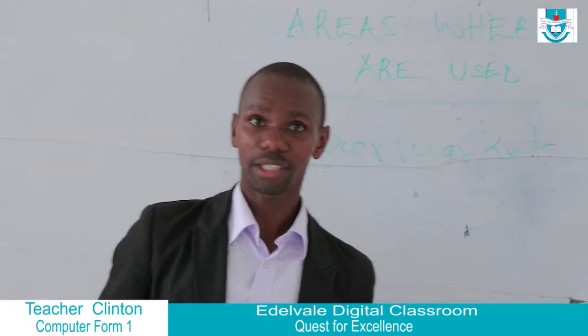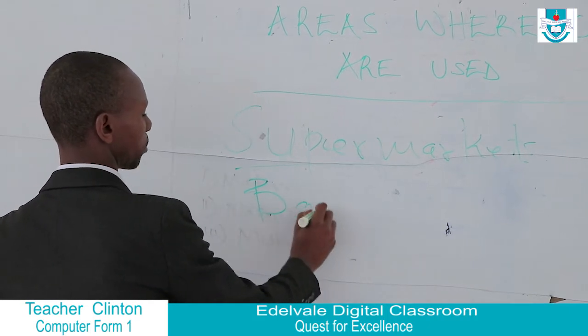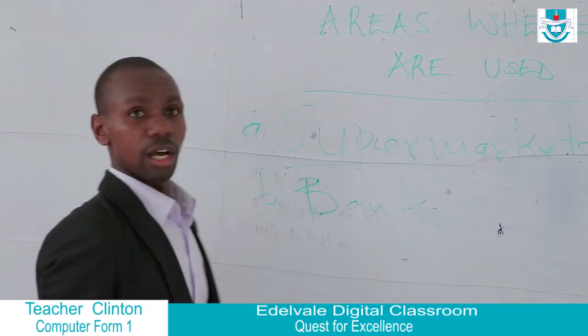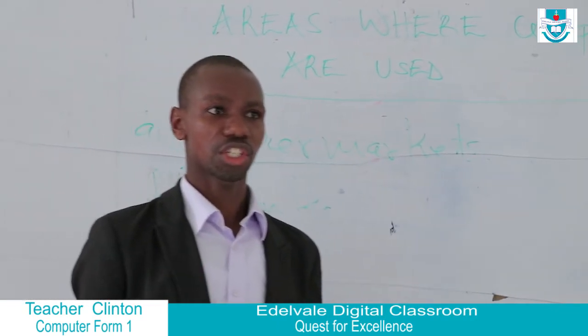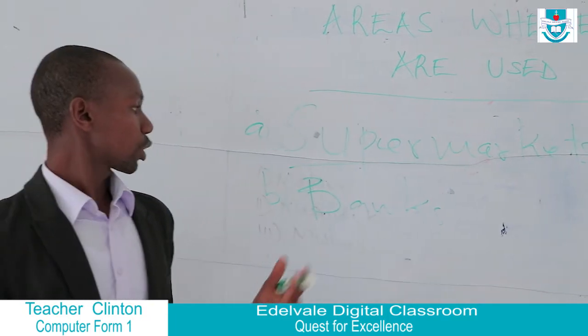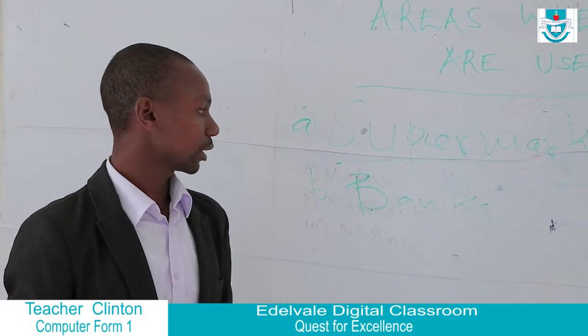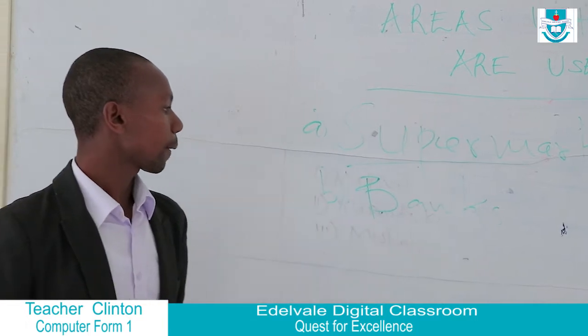Another area where we have seen computers being used is in banks. In banks, computers are being used to dispense cash through machines called ATMs. At the same time, they can be used to keep the records of the bank's customers and their clients.